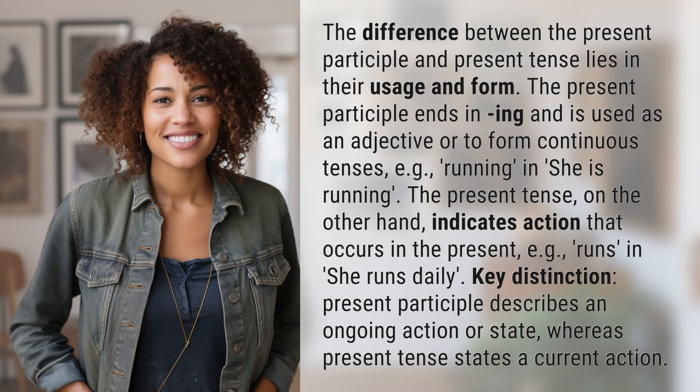The difference between the present participle and present tense lies in their usage and form. The present participle ends in "-ing" and is used as an adjective or to form continuous tenses, e.g., "running" in "she is running."